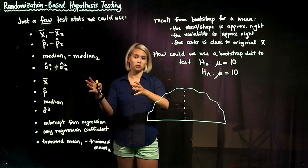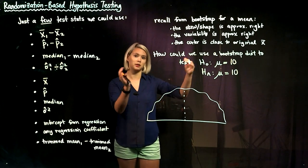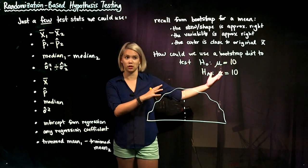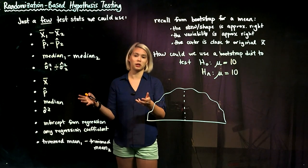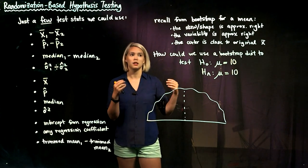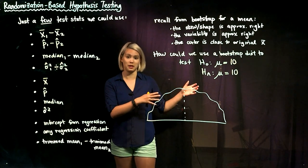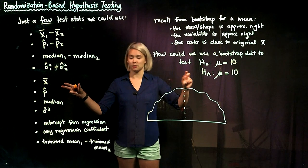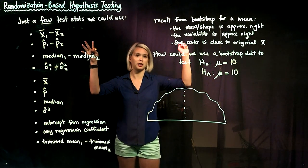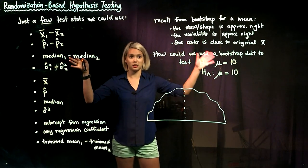In other words, the bootstrap distribution's shape is approximately the shape of the sampling distribution for the mean. Similarly, the variability for the bootstrap distribution is approximately the variability for the sampling distribution for the mean. One variability is approximating the other, one shape is approximating the other, the skew is approximating the other.